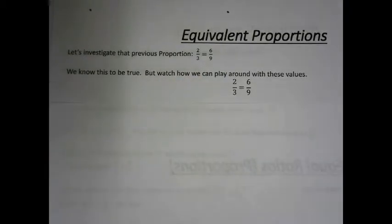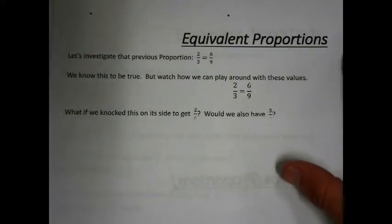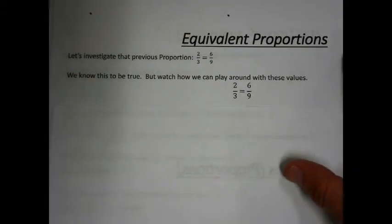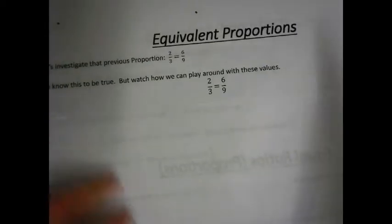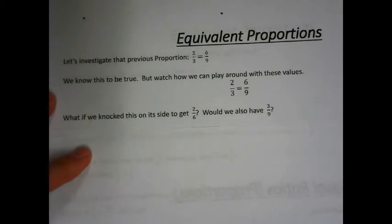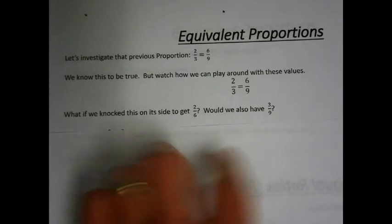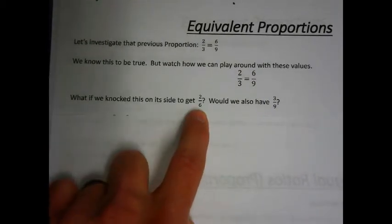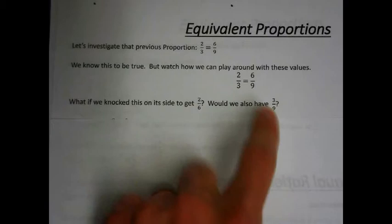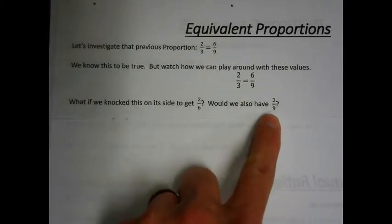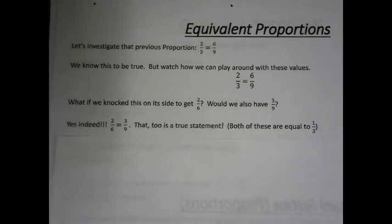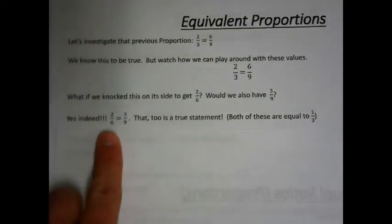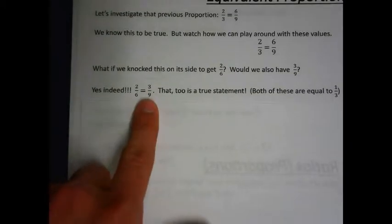Watch how we can play around with these values. 2 thirds equaling 6 ninths — what happens if we knock this on its side and end up with 2 over 6? Can we do that? Yes, but what else would we have? We'd have 3 over 9. So if we knock this on its side to get 2 over 6, we would also have 3 over 9. Is this true? Yes, indeed it is. 2 over 6 is indeed equal to 3 over 9.